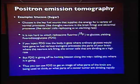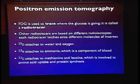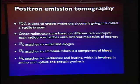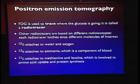There are other radio tracers: heavy oxygen O-15 can be attached to water and oxygen — useful when you want to see where water goes. Nitrogen-13 attaches to ammonia, a component of blood, allowing you to track blood flow. Carbon-11 can be used to track amino acid uptake and protein synthesis in the brain.